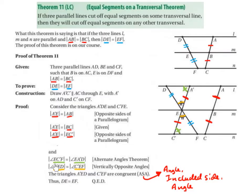Also, the angle A'ED, shown in orange, equals the angle C'EF, also in orange, because vertically opposite angles are equal. These angles are opposite each other at point E, so they are equal.